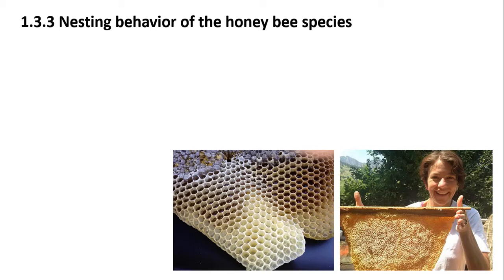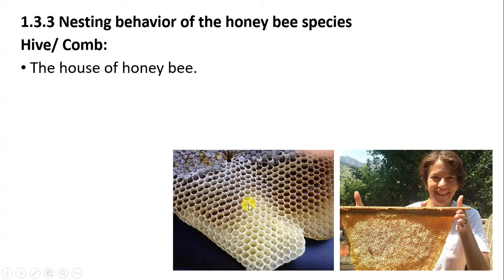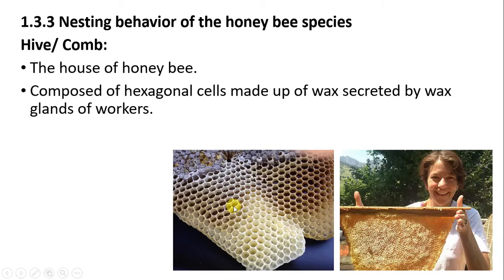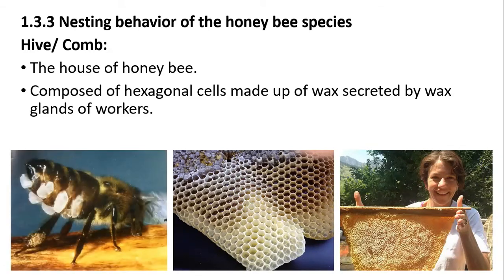Today's topic is the nesting behavior of the honeybee species. We start with the hive, also called the comb, which is the house of the honeybees. Whenever we observe the hive, we can see hexagonal cells — 'hexa' means six, so there are six sides present in these cells. They are all made of wax, which is secreted by the wax glands present in the worker honeybees.